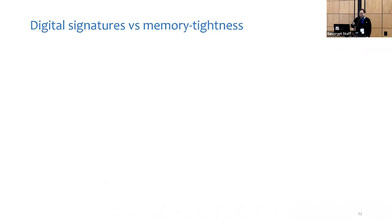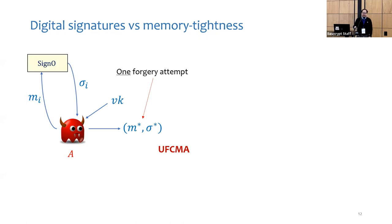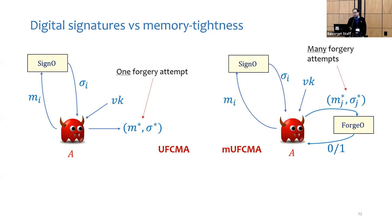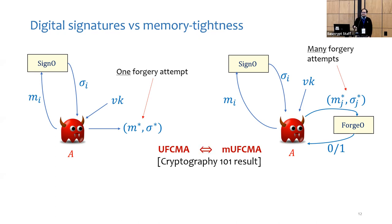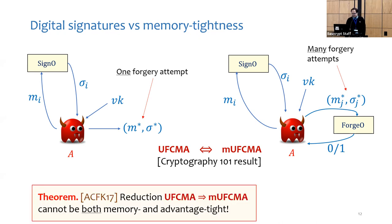Let me tell you the story of digital signatures and memory tightness. Unforgeability of digital signatures can be defined in two ways: one where the adversary can make only one forgery attempt, referred to as UF-CMA, and another where the adversary can make multiple forgery attempts, referred to as MUF-CMA. In the memory-unbounded setting, these two notions are equivalent. However, in the memory-restricted setting, Rbac et al. showed that the reduction UF-CMA implies MUF-CMA cannot be both memory- and advantage-tight.